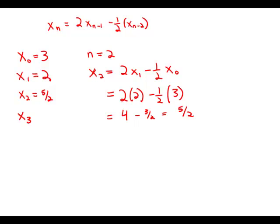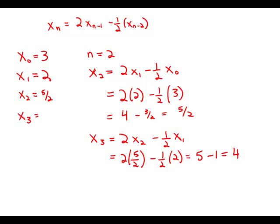Now we need to follow that same process to find x sub 3. So x sub 3 equals 2 times the number before it, which is now x sub 2, minus 1 half times the number 2 before it, which is x sub 1. So that is 2 times 5 halves minus 1 half times 2. So this is 5 minus 1, which is 4. And this is answer choice C.